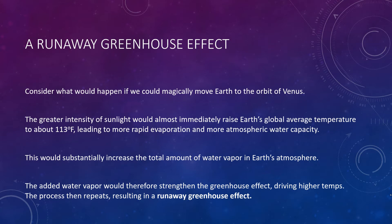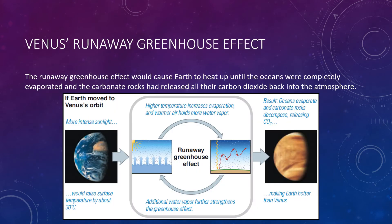The combination of more evaporation and a greater atmospheric capacity for water vapor would substantially increase the amount of water vapor in the atmosphere. Remember, water vapor, just like carbon dioxide, is a greenhouse gas. The added water vapor would therefore strengthen the greenhouse effect and drive temperatures higher, which would in turn lead to even more ocean evaporation and more water vapor — further strengthening the greenhouse effect. In other words, we'd have a positive feedback process that would rapidly spin out of control, resulting in what we call a runaway greenhouse effect.